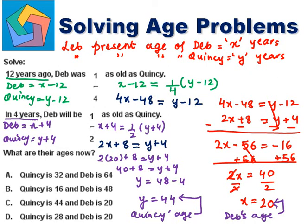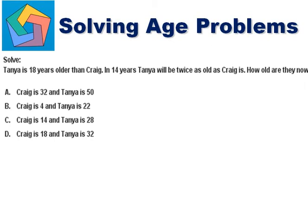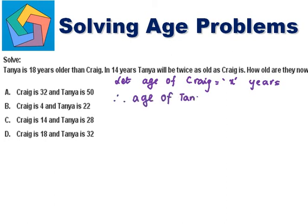We can highlight it. Next problem. Solve. Tanya is 18 years older than Kreech. In 14 years, Tanya will be twice as old as Kreech is. How old are they now? Let the age of Kreech be X years. Tanya is 18 years older than Kreech, therefore the age of Tanya will be X plus 18.